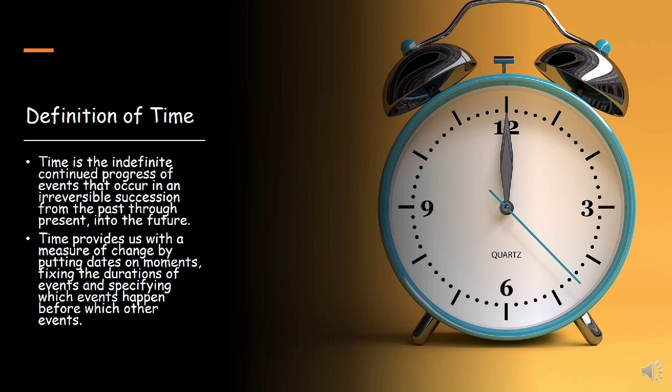Also, time provides us with a measure of change by putting dates or moments, fixing the duration of events, and specifying which event happened before which other event. That is to say, time helps us to assign dates to which an event will occur. Time helps us to set duration of events.